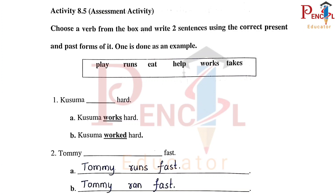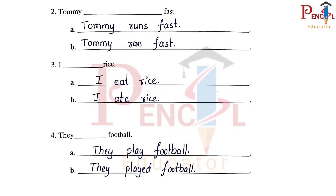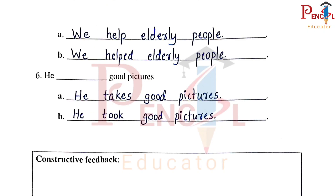Activity 8.5. First: Kusuma works hard / Kusuma worked hard. Second: Tommy runs fast / Tommy ran fast. Third: I eat rice / I ate rice. Fourth: They play football / They played football. Fifth: We help elderly people / We helped elderly people. Sixth: He takes good pictures / He took good pictures. This concludes Seventh English Kalika Chaturke.